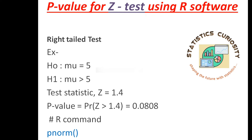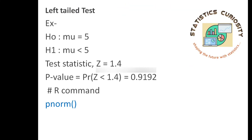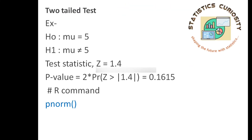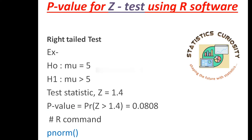We can see there are 3 kinds of hypothesis tests in general: right tail test, left tail test, and two tail test. So first let's start with the right tail test.